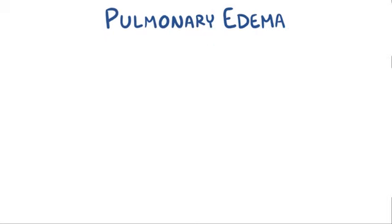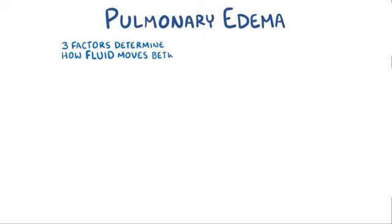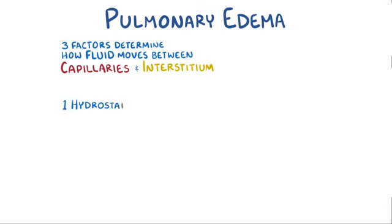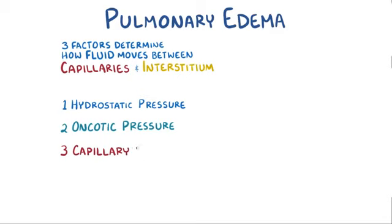To understand pulmonary edema, let's first talk about the three main factors that determine how fluid moves between the capillaries and interstitial fluid, which are the hydrostatic pressure, oncotic pressure, and capillary permeability.